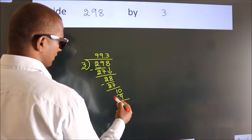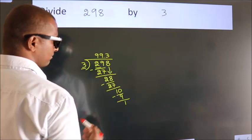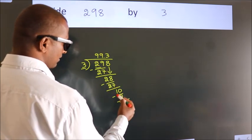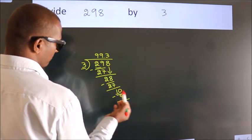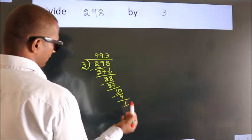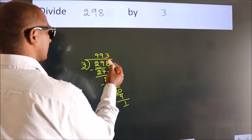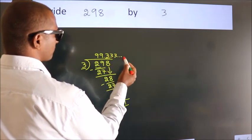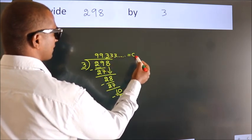Now we subtract. We get 1. Now, you observe. We had 1 here, and we got 1 again. That means this number keeps on repeating. So, this is our quotient.